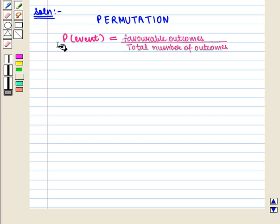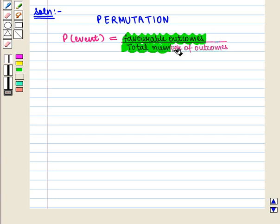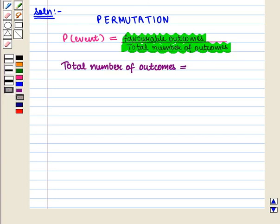We know that the probability of an event is given by favorable outcomes upon total number of outcomes. First we shall find the total number of outcomes.